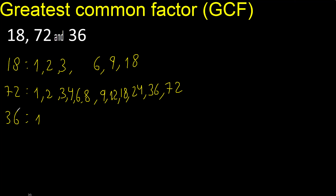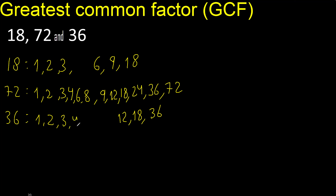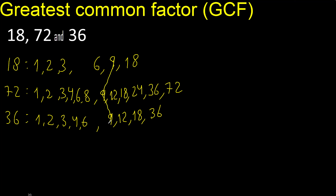Factors: divided by 1, divided by 2, divided by 3, divided by 4. Cannot be divided by 5. Next, 6 — 6 is here. Factors — equal, equal, equal.